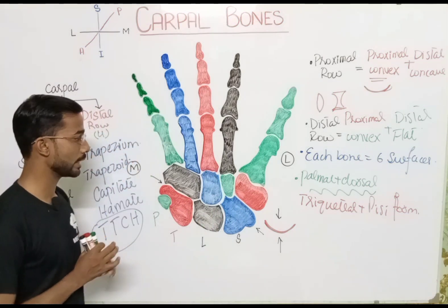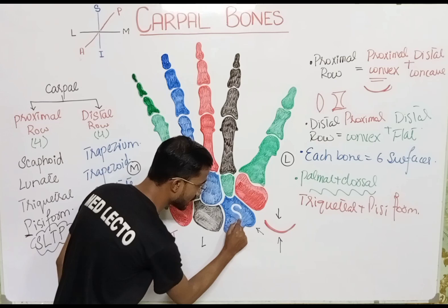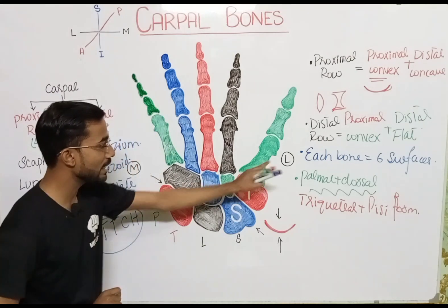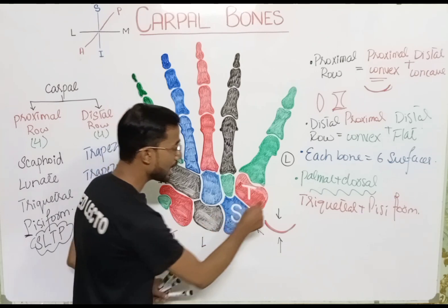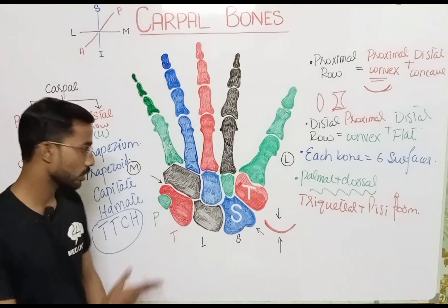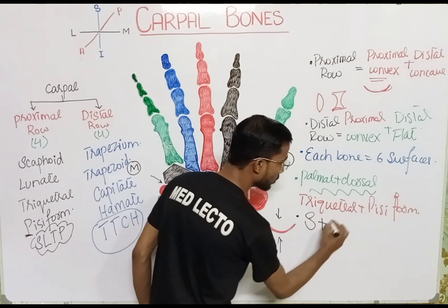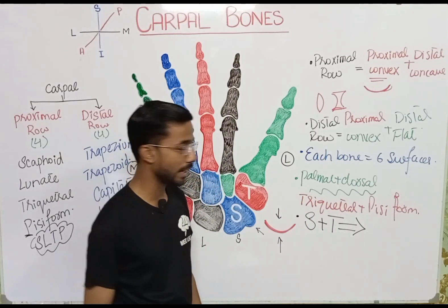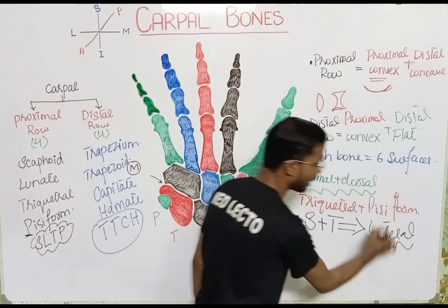At the lateral side, you will see two bones: the scaphoid and the trapezium. These two bones have no attachment or articular surface at their lateral side. This is another important point.